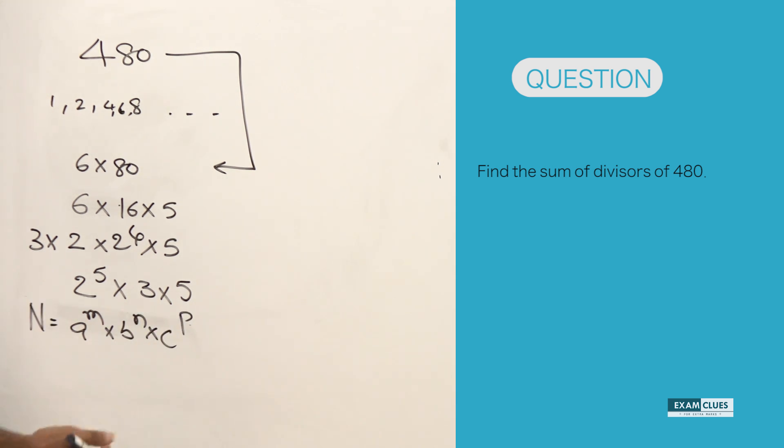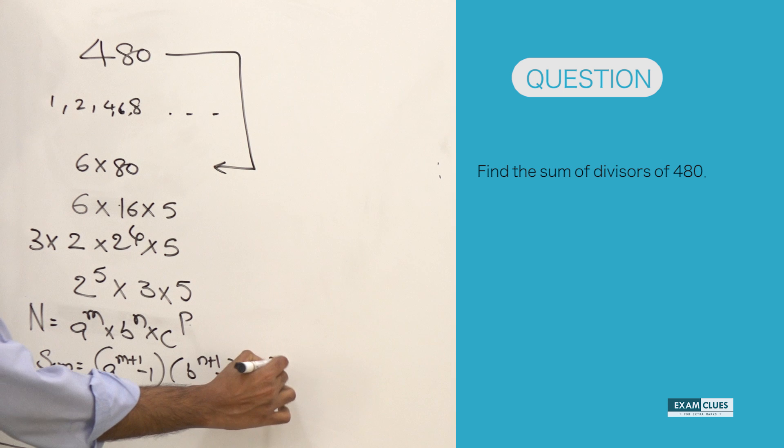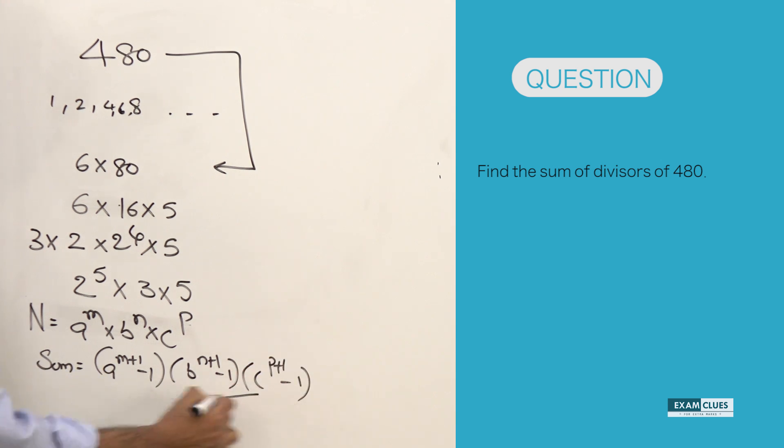The sum of the factors is going to be a power m plus 1 minus 1 into b power n plus 1 minus 1 into c power p plus 1 minus 1, divided by a minus 1 into b minus 1 into c minus 1. So this is the formula for sum of the factors.